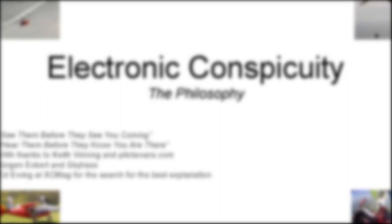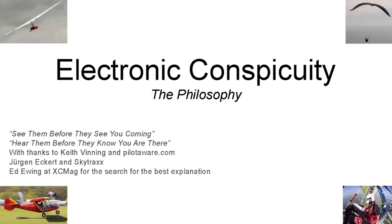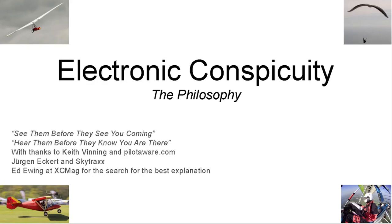Brief lecture on electronic conspicuity. I'm going to try and rattle along — there's quite a few slides to get through — but the basic idea is just to look at some electronic conspicuity technologies, explain how they work, why they work, who they're for, and why they're not all compatible. Because everybody's moaning on the paragliding groups and forums about why aren't all these technologies compatible. Well, there is no compatible technology for somebody who wants to drive 250 miles in a car compared to somebody who wants to cycle 150 yards on a manually pedalled bike — they're different technologies, different jobs.